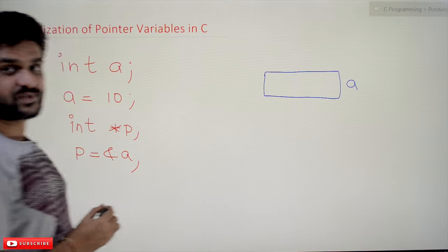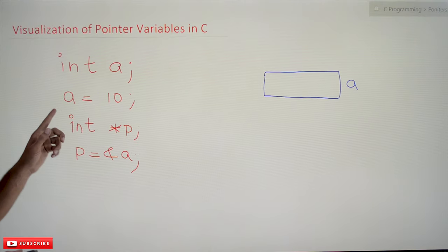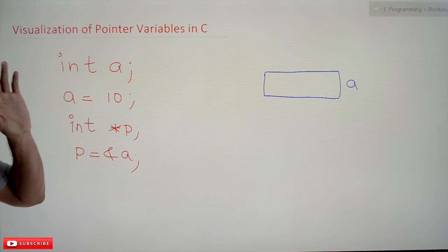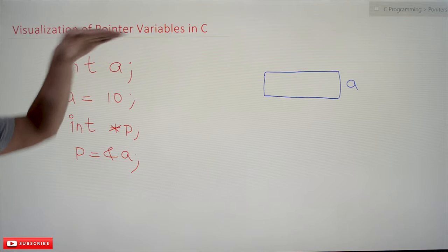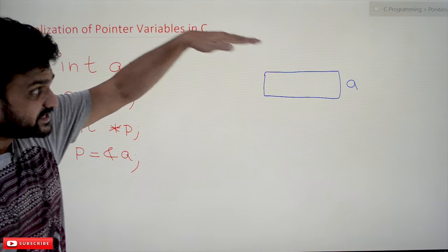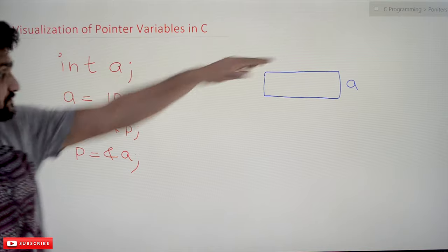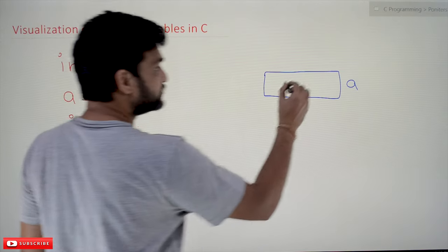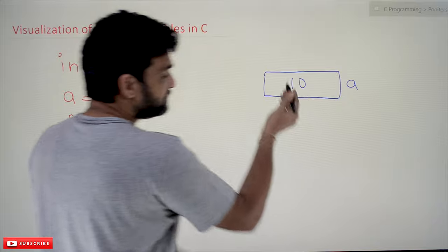Next is a equals 10. Now this memory block is getting stored with some integer value. What is that integer value? 10. It may be 4 bytes, it may be 2 bytes, or it may be 6 bytes.